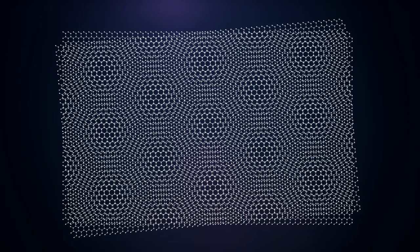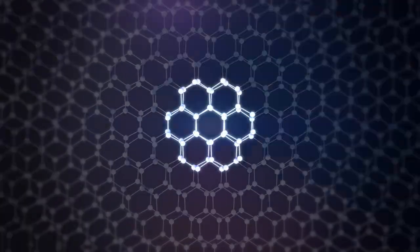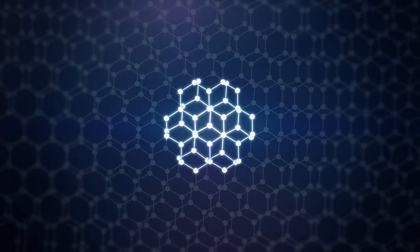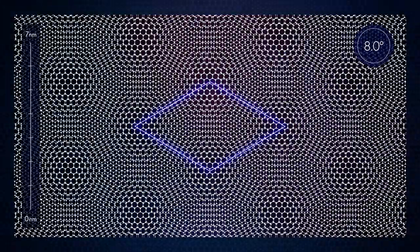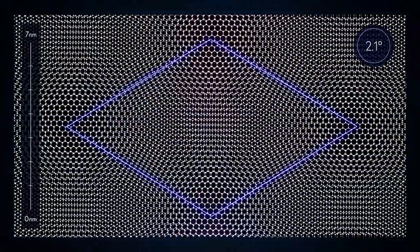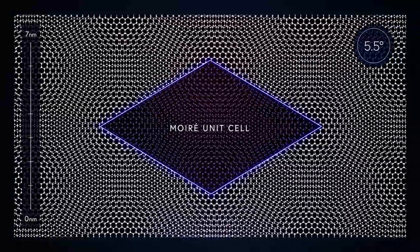Looking closer, we can see symmetry points, where the atoms in both layers either overlap perfectly or are perfectly misaligned. By changing the twist angle, these symmetry points move closer or further apart and create the building blocks of a moiré superlattice, arising from a superposition phenomenon called a moiré pattern, which has its own periodic repetition larger than that of the atomic lattices forming it.